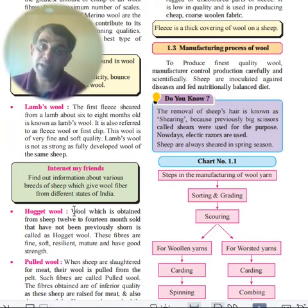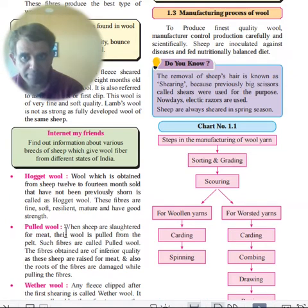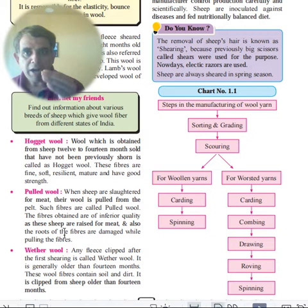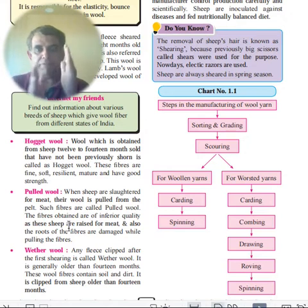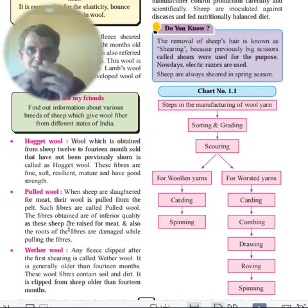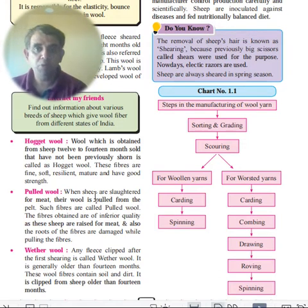Hogget wool is obtained from sheep aged 12 to 14 months. This is an important distinction: 12 to 14 months is Hogget; beyond 14 months is Wether. Pulled wool is taken from sheep slaughtered for meat — it is pulled from the pelt and is not very good quality.